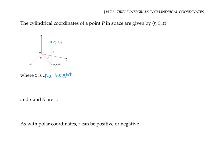And r and theta are the polar coordinates of the projection of the point onto the xy plane. In other words, r is the radius of the projection of the point, and theta is the angle that projected point makes from the positive x-axis.